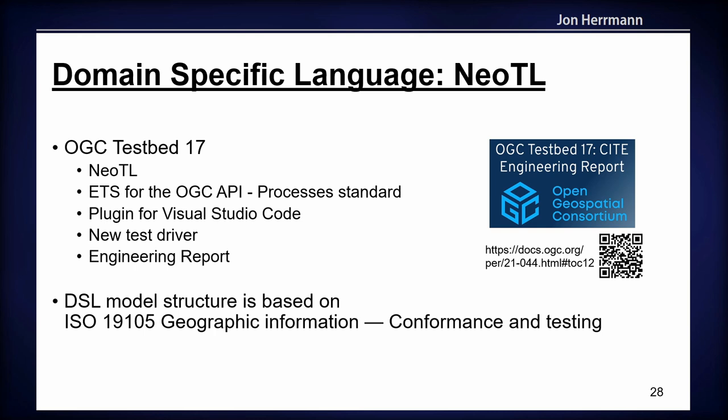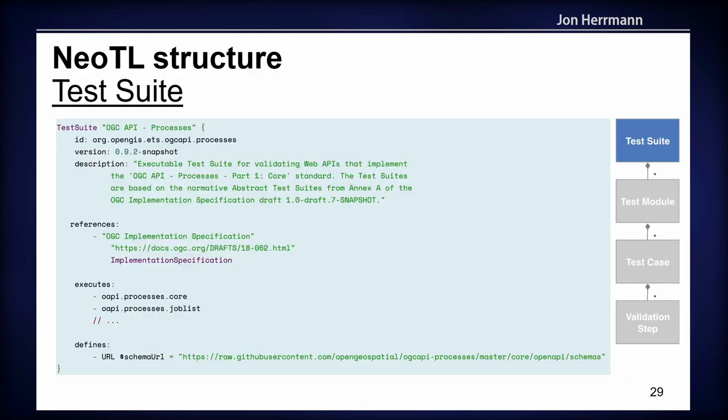The DSL is based on ISO 19105, which the team engine also uses. This is an example of a test suite for OGC API Processes — it looks similar to YAML but has its own syntax.